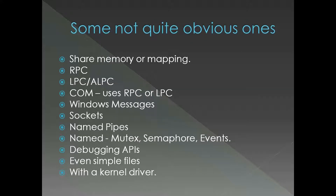These are some of the other inter-process communication mechanisms within Windows: shared memory or memory mapping, remote procedure call, local procedure call, component object model (which uses remote procedure call or local procedure call internally), Windows messages, sockets, named pipes, named mutex, and semaphore.